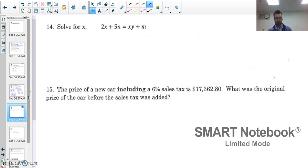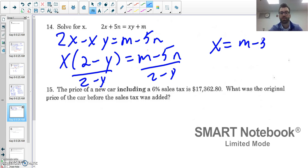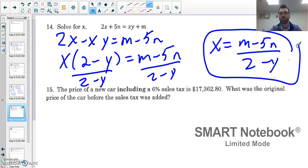Number 14, solving for x. We have a lot of variables going on here. What I want to do is get every single term with x on one side and all the other remaining terms on the other side. So I'll have 2x - xy = m - 5n. I want to get all the x terms on one side, so I'm going to take out a greatest common factor and isolate my x: x(2 - y) = m - 5n. To get x by itself, divide by 2 - y. So x = (m - 5n)/(2 - y).